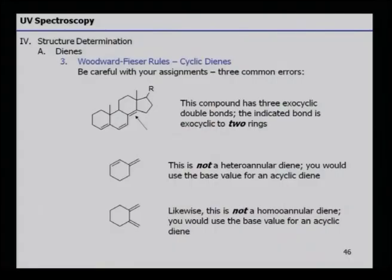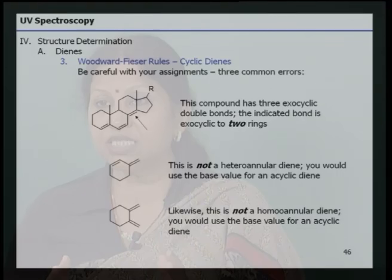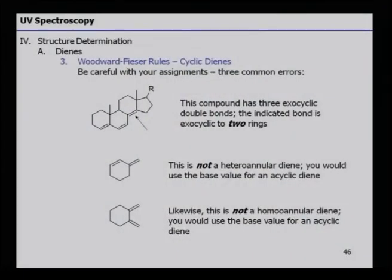When applying the Woodward-Fieser rule, be careful when assigning double bonds. For certain compounds, there may be three exocyclic double bonds, and an indicated bond may be exocyclic to two rings simultaneously. In such a case, this is not a heteroannular diene — you would use the base value of an acyclic diene. Likewise, if it is not truly a homoannular diene, you would use the base value of a cyclic diene. One must correctly recognize whether it is a heteroannular or homoannular diene, otherwise the entire calculation will go wrong.